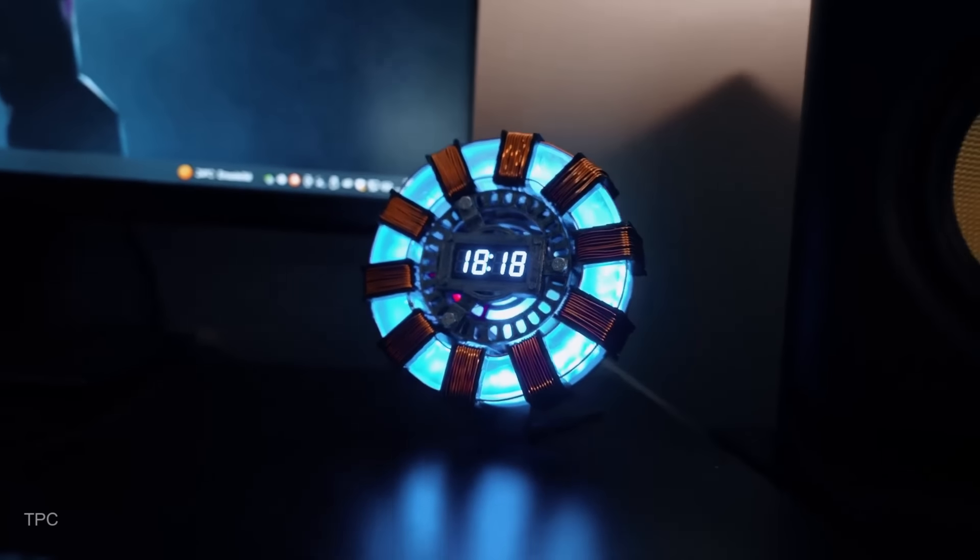Two LEDs were soldered directly onto a mini-ESP32 to illuminate the back of the clock. To prevent short circuits, he added tiny insulators on each resistor, then completed the setup by attaching the display. Once assembled, the Iron Man-inspired desk clock looked fantastic.